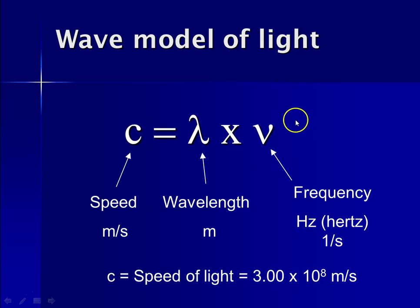So later on in this unit, you'll see that since we know c, the speed of light, because it's a constant, it never changes. If we know its wavelength, we can calculate its frequency. And if we know its frequency, we can calculate its wavelength.